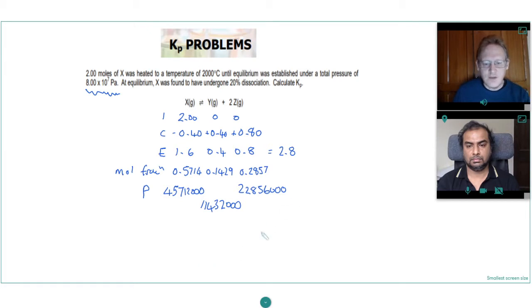So now if we write our equation for Kp, and if we remember it's products over reactants, we've got the partial pressure of Y times by the partial pressure of Z squared, all divided by the partial pressure of X. Okay, so now we just put our partial pressures in.